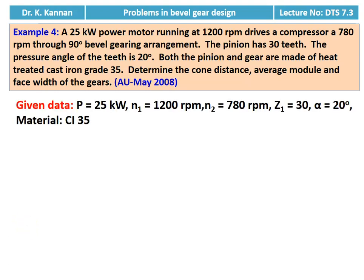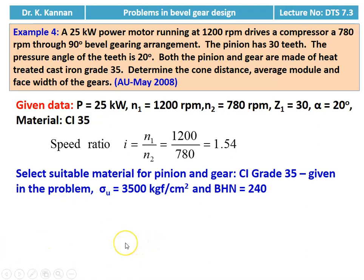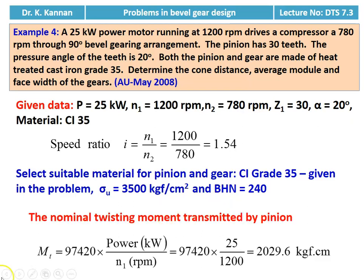We write down the given data: power = 25 kilowatt, pinion speed = 1200 rpm, gear speed = 780 rpm, Z1 = 30, pressure angle alpha = 20°, material = cast iron grade 35 for both gear and pinion. Speed ratio i = N1 / N2 = 1200 / 780 = 1.54. For cast iron grade 35, we take sigma_u = 3500 kgf/cm² and BHN = 240 from the data book. Nominal twisting moment: MT = 97420 × P(kW) / N1 = 97420 × 25 / 1200 = 2029.6 kgf·cm.